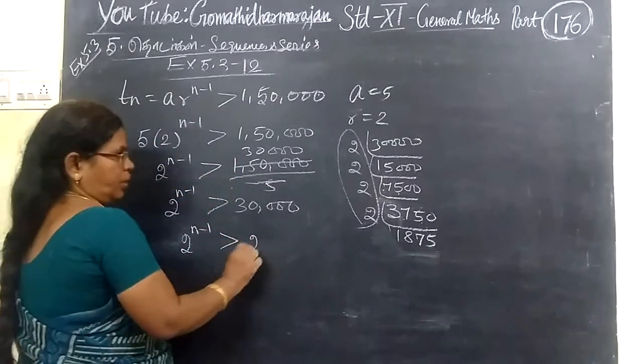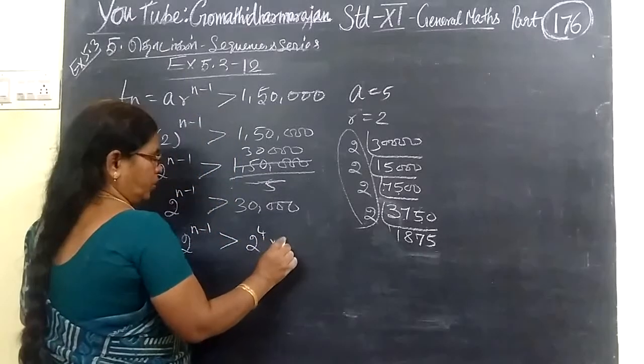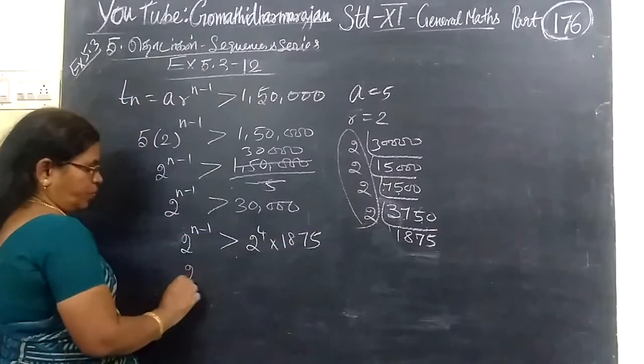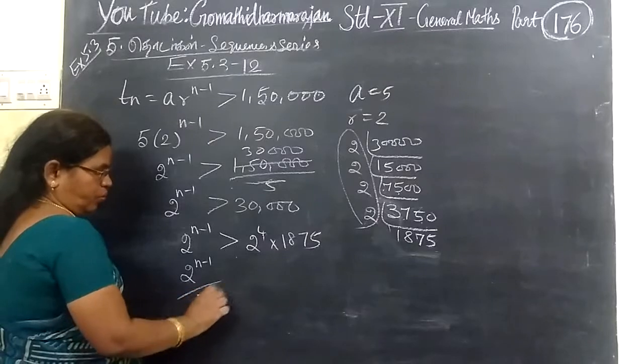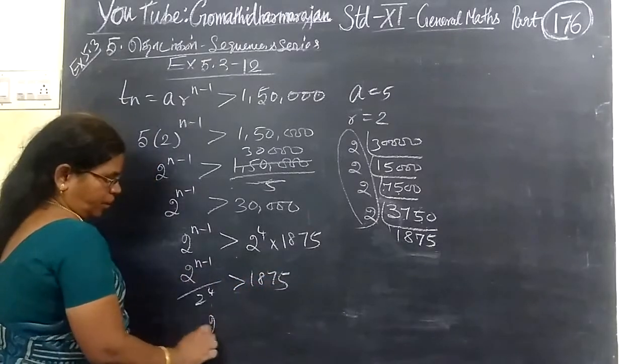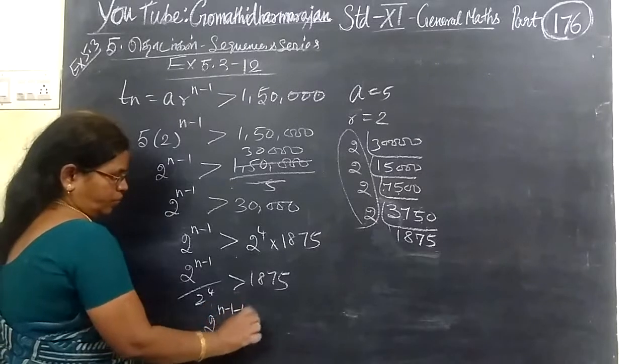So, here we are writing 2 power 4 into 1,875. Now, 2 power 4 can be taken to the left side. So, 2 power n-5 greater than 1,875.